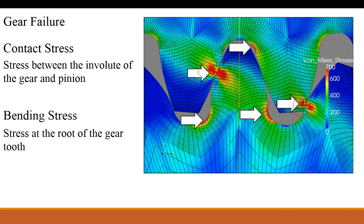Another source of stress is at the fillet — this is the bending stress. As the gear transmits force, the tangential force is acting across the tooth, and as it's being pushed it creates stress down at the bottom — at the fillet — because that's where it wants to bend, hence the name bending stress. This is the stress at the root of the gear tooth where you can see potential for fracture. This is another thing to keep in mind when setting up your gear design, as well as for designing your drive shaft and axles.